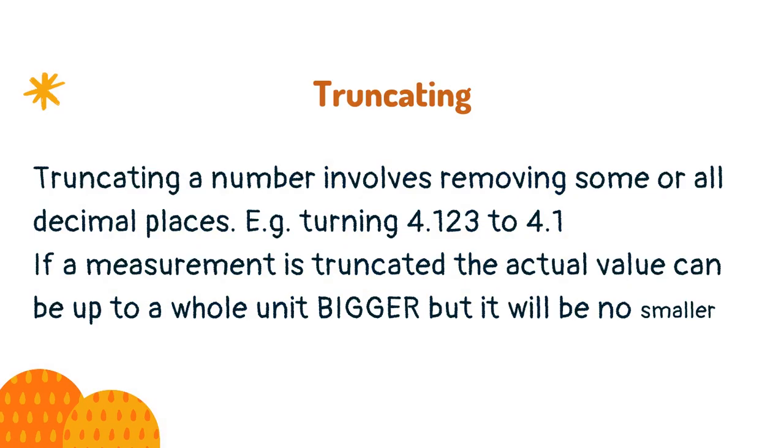Truncating a number involves removing some or all decimal places. For example, turning 4.123 to 4.1. If a measurement is truncated, the actual value can be up to a whole unit bigger but it will be no smaller.